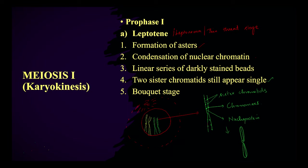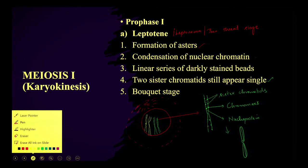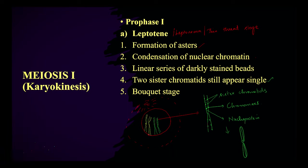Leptotene is also called the bouquet stage, because the chromatids remain attached to the nuclear membrane, which resembles a bouquet. That's why it is called the bouquet stage.